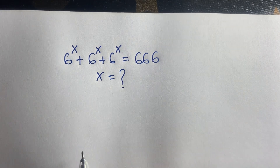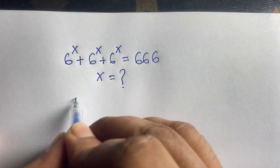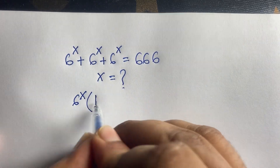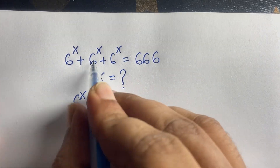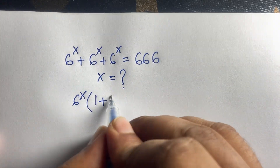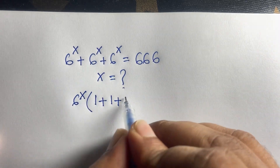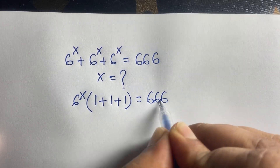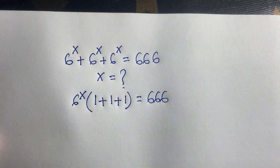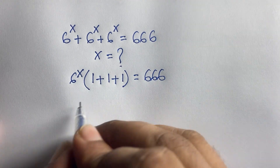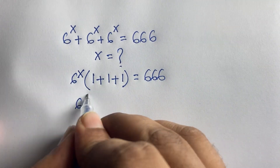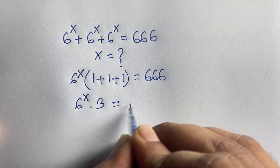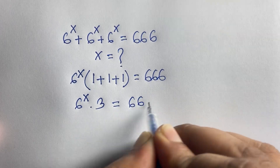Here, 6 to the power x is common. So factoring it out: this divided by this gives 1, plus 1, plus 1, which equals 3. So we get 6 to the power x times 3 is equal to 666.